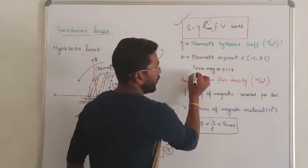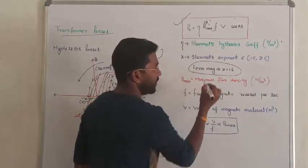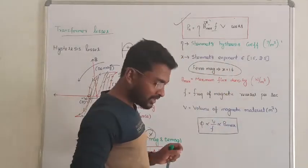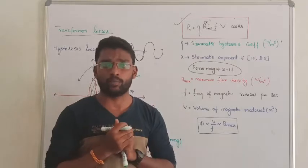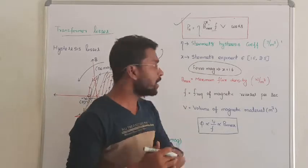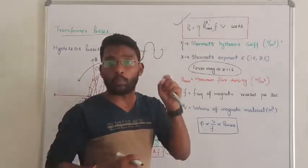For ferromagnetic material, this value is 1.6. If we design a transformer with ferromagnetic material, the value of X is going to be 1.6.